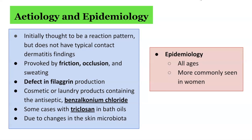Defects in filaggrin production may be a contributing factor. A defect in producing filaggrin from pro-filaggrin may result in keratohyalin granule retention and increased pH of the stratum corneum, which leads to a defective skin barrier function. The result of granular parakeratosis was thought to arise as a protective mechanism; however, chemical irritation may exacerbate this process.